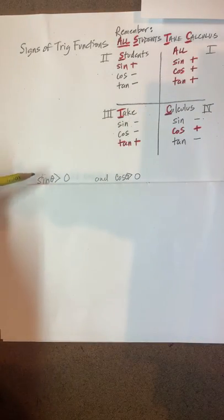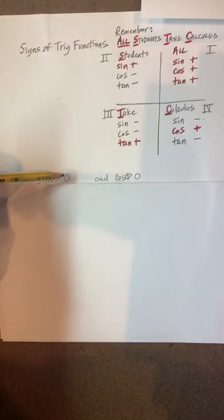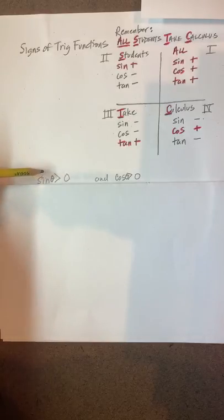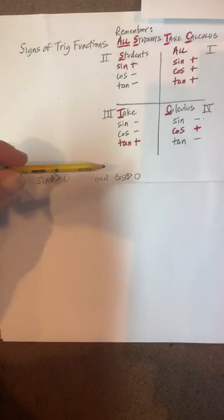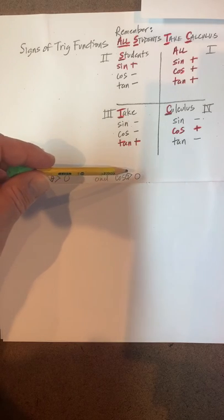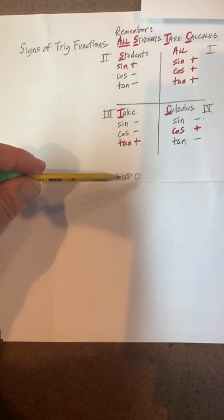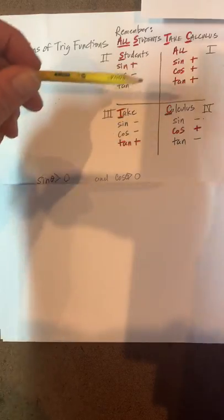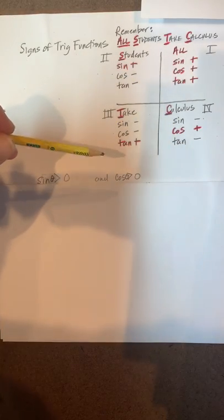Here we're looking for sine of theta is greater than zero, so sine is going to be positive, and then cosine theta is greater than zero, so cosine is going to be positive. So in which quadrant are both sine and cosine positive?